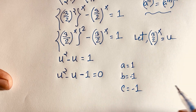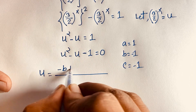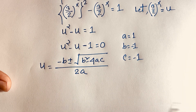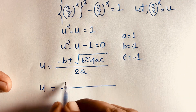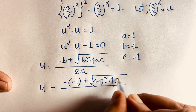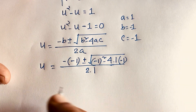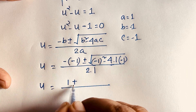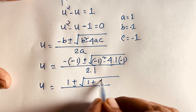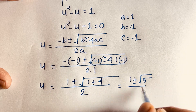Using the quadratic formula, u equals minus b plus or minus square root of (b² minus 4ac) over 2a. Substituting: u equals minus(−1) plus or minus square root of ((−1)² minus 4·1·(−1)) over 2·1. Since (−1)² is 1 and minus times minus gives plus 4, we get u equals 1 plus or minus square root of 5 over 2.